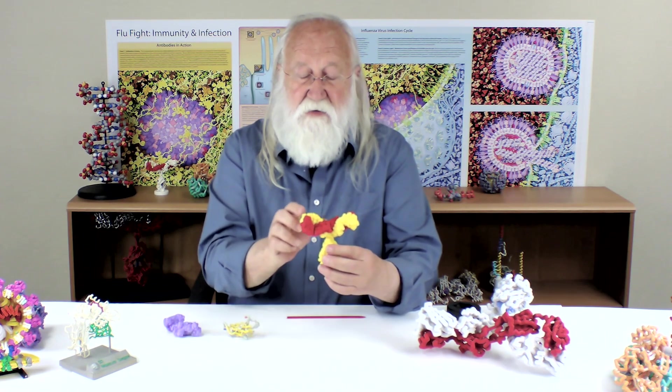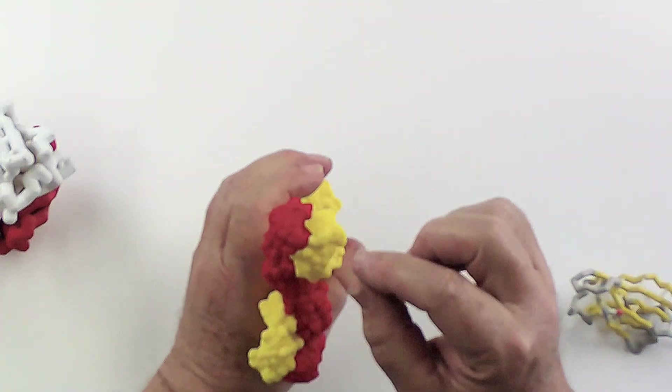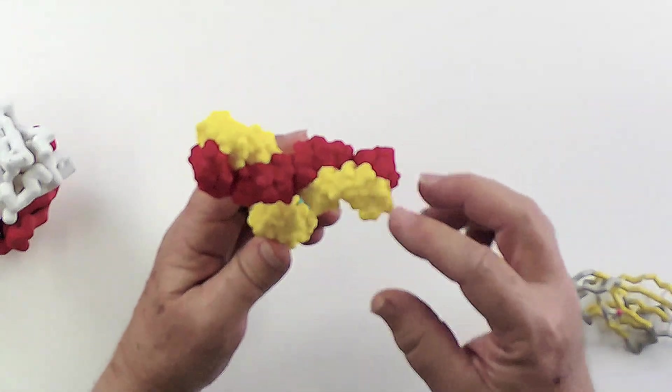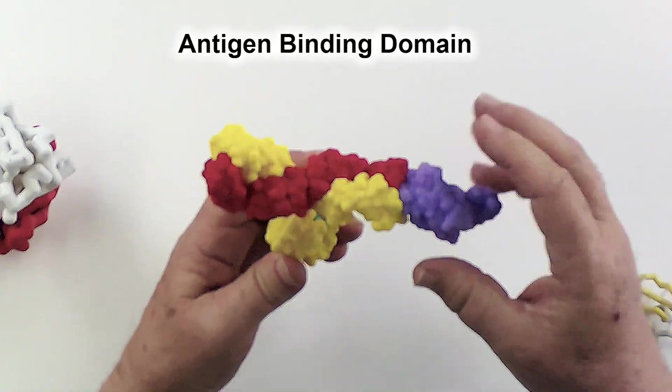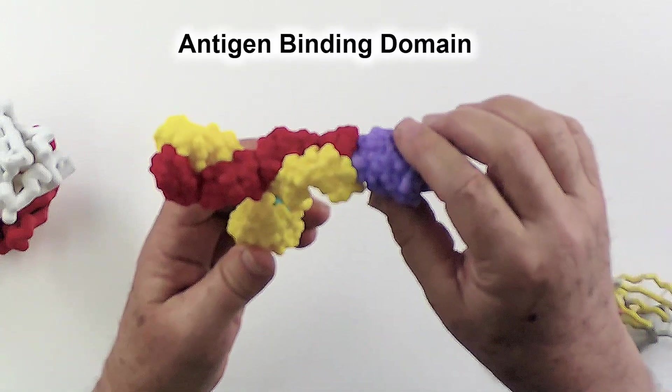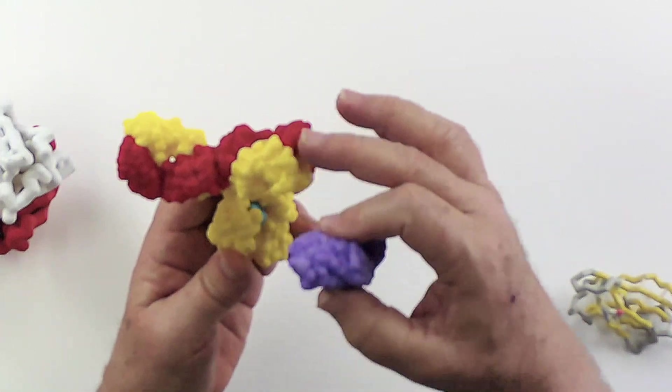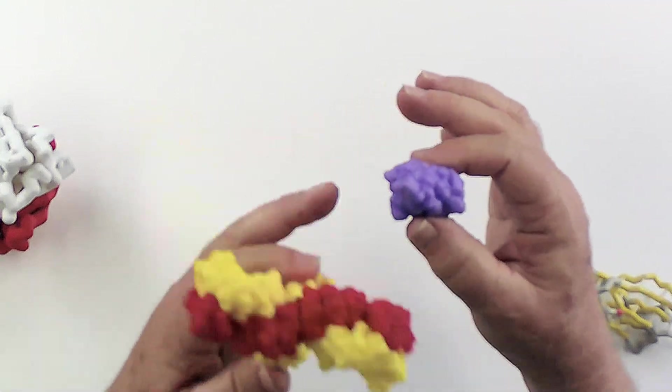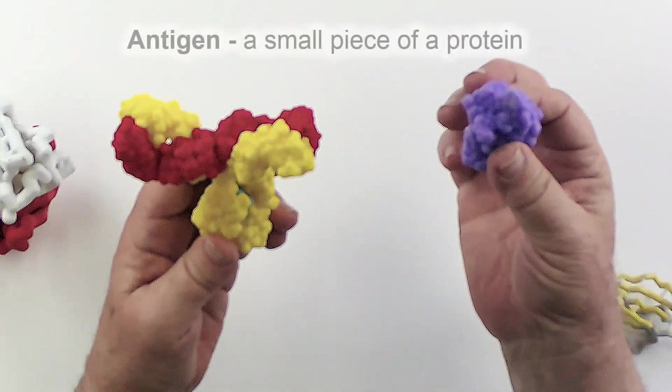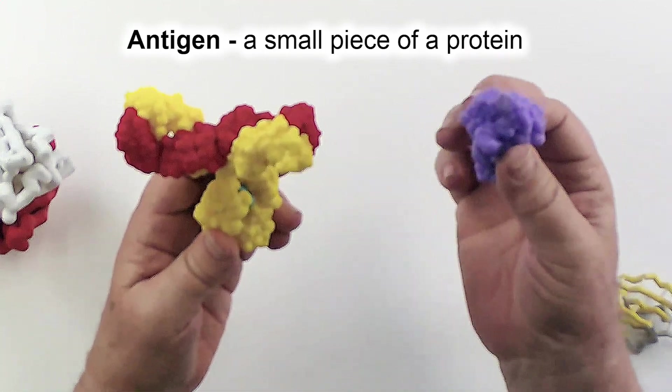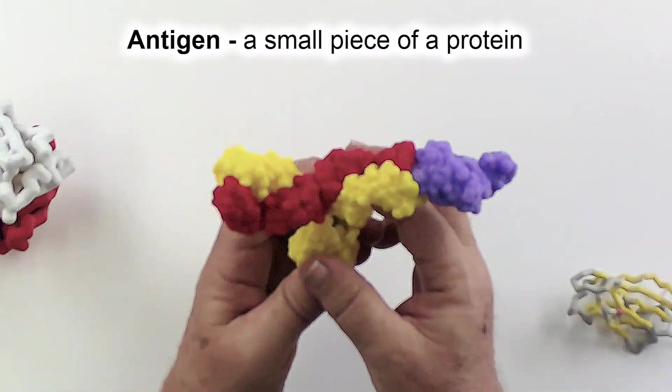The business end of an antibody is this right here where you have a combination of the end of one heavy chain and the end of one light chain. This makes up what is known as an antigen binding domain. This is the place on the protein which is evolved to be complementary both in its three-dimensional shape and its chemistry. That is the chemical properties of the side chains that make up this surface of protein and a corresponding surface on an antigen or sometimes an epitope. This is a piece of a protein. This is actually going to be part of that spike protein on the coronavirus. So it can bind to the spike protein epitope right here.